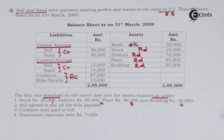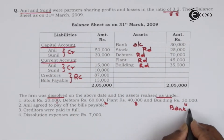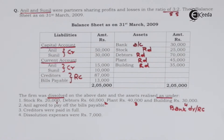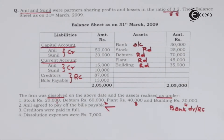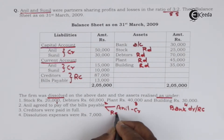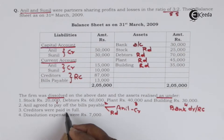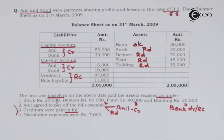These four assets are sold and the amounts received, so the first effect is bank account debit. Another effect is realization account credit. Anil agreed to pay off bills payable, meaning Anil has taken over this liability — Anil's capital account will be credited and the realization account will be debited. Creditors were paid in full — amount goes out, so cash is credited and realization account is debited.